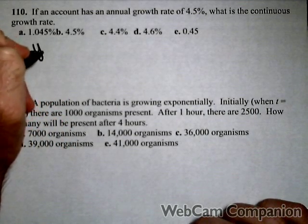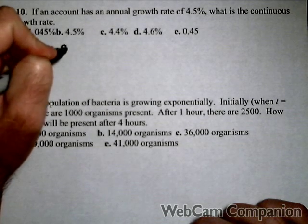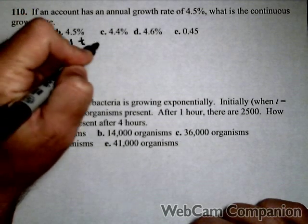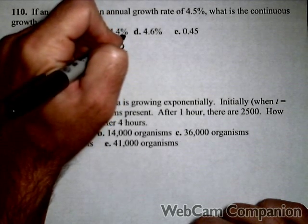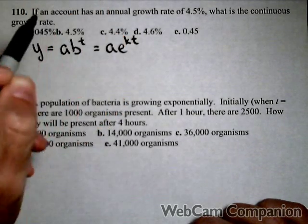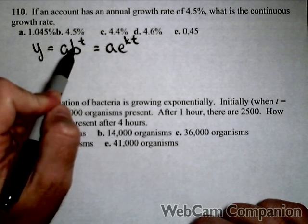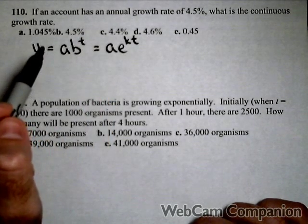So we have two forms of exponential functions. We have AB to the T and AE to the KT or RT, either or. And the big difference is, this is typically made with an annual rate, this is made with a continuous rate.